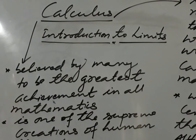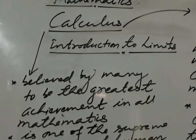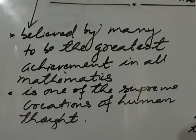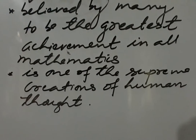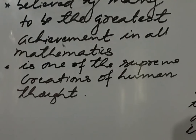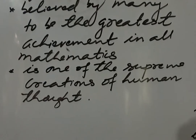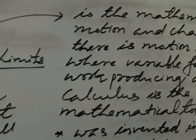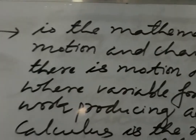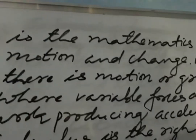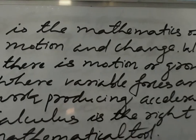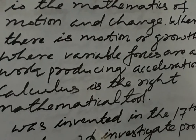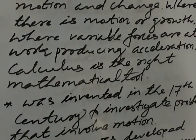Now let's move into calculus. Calculus — it is believed by many to be the greatest achievement in all of mathematics, and calculus is one of the supreme creations of human thought. You can estimate how powerful calculus is in mathematics and in many academic subjects. Calculus is the mathematics of motion and change. Where there is motion or growth, where variable forces are at work producing accelerations, calculus is the right mathematical tool.